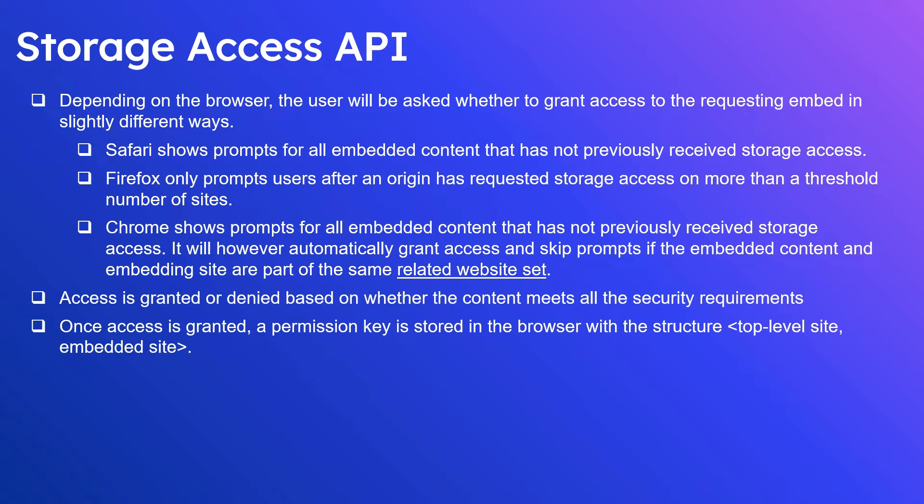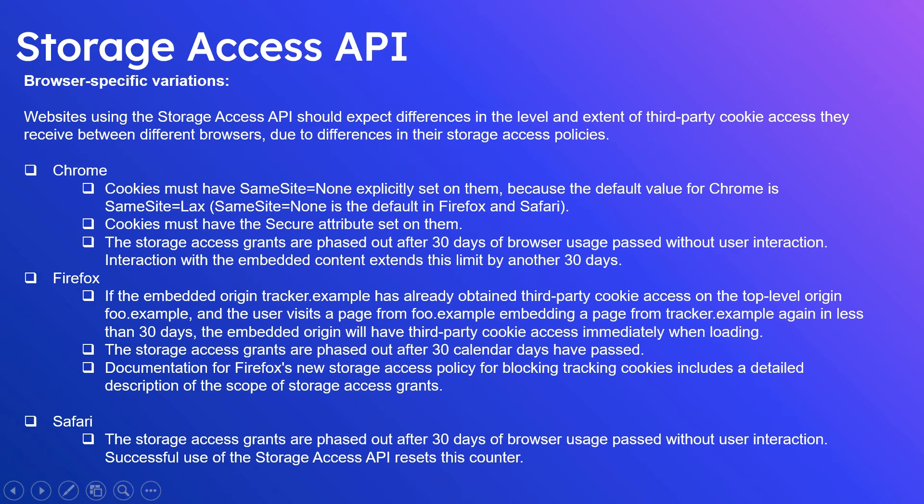Access is granted or denied based on whether the content meets all the security requirements. Once access is granted, a permission key is stored in the browser with the structure: top-level site, comma, embedded site. Some browser-level variations when using the Storage Access API: on Chrome, cookies must have SameSite=None — this must be set explicitly because the default value for Chrome is SameSite=Lax.